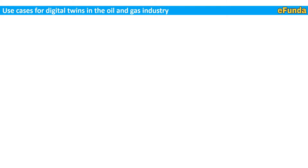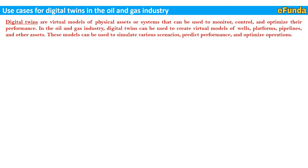The oil and gas industry is one of the largest and most complex industries in the world, with vast reserves, complex drilling operations and sophisticated production processes. It is critical that the industry uses the latest technology to ensure efficiency and safety. One of the emerging technologies that has gained significant traction in recent years is digital twins — virtual models of physical assets or systems that can be used to monitor, control and optimize performance. Digital twins can create virtual models of wells, platforms, pipelines and other assets to simulate various scenarios, predict performance and optimize operations.